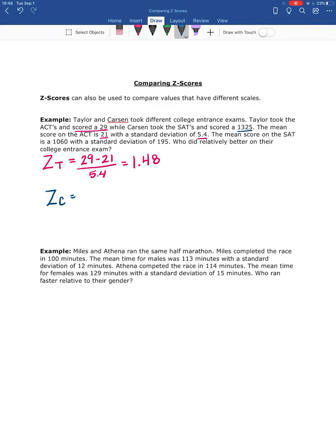Carson took the SAT. He scored a 1325. The SAT mean was 1060, and the standard deviation was 195. So we take Carson's score of 1325 minus 1060 divided by 195. Again, make sure you get the result of the 1325 minus 1060 first, which is 265.